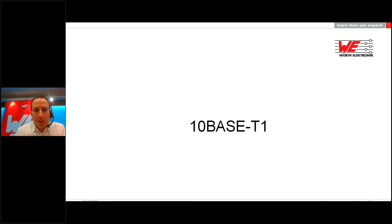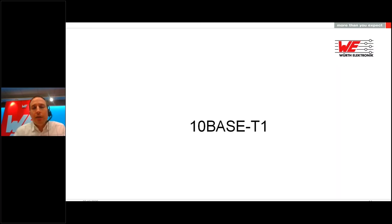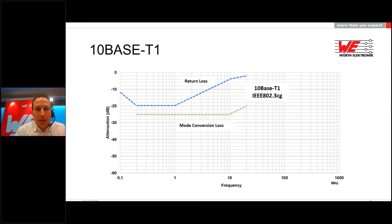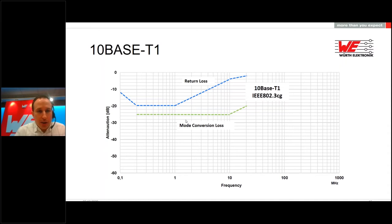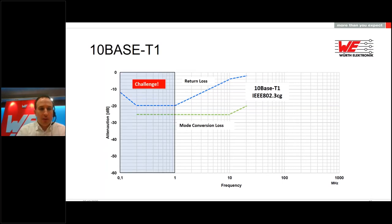Now I want to talk about 10Base-T1—specifically 10Base-T1L, which is 10 Mbit/s over 1,000 meters. Looking at the IEEE requirements, we have the return loss shown in blue and the mode conversion loss—these are the MDI requirements from the IEEE 802.3cg standard. The challenge for both the return loss and mode conversion loss is the lower frequency range: from 100 kHz up to 1 MHz. This makes it somewhat complicated to handle, as you can see in the next slides—but we found solutions.